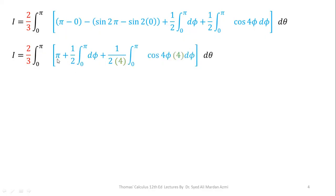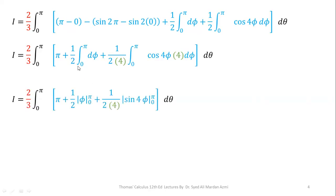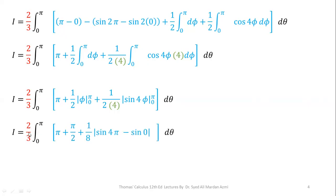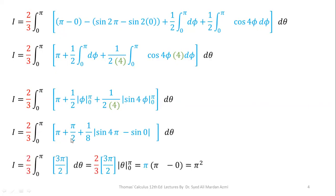After simplification, from the first term we get pi, and for the cos 4phi term, to integrate it we need the derivative of the angle as a multiplier, so we multiply and divide by 4. Performing the integration for the given limits: pi times 1 over 2 phi from 0 to pi, plus 1 over 2 times 4 sine 4phi from 0 to pi. This gives 2 over 3 times pi times pi over 2, and sine 4pi minus sine 0 equals 0. So we are left with pi plus pi over 2, which equals 3 pi over 2, multiplied by 2 over 3. The integration of d theta from 0 to pi gives theta evaluated as pi.